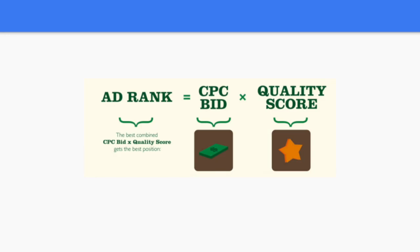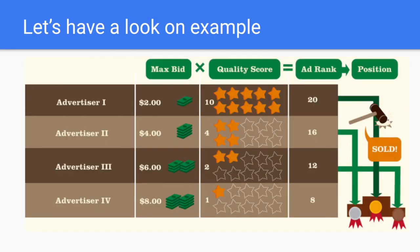Ad rank is what's used to calculate how much you're going to spend per click. Simplified as much as possible, ad rank represents your bid — how much you're ready to pay — multiplied by your quality score. Let's have a look at an example. We have four advertisers, each paying a different bid. The first is paying a $2 bid with a quality score of 10; the second a $4 bid with quality score 4; the third a $6 bid with quality score 2; and the fourth is paying four times more than the first but has a quality score of 1. These two variables are multiplied together and the results are ranked from best to worst.